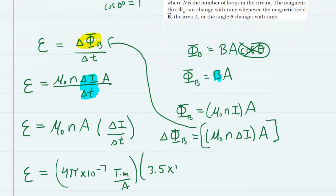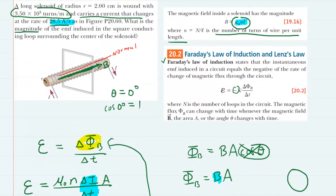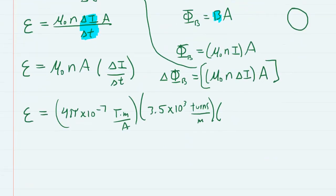3.5 times 10 to the third turns per meter multiplied by the area of the solenoid. Now the cross section of a solenoid would be circular in shape. If you were to sort of go back to the picture and look this way down the length of the solenoid, you would see a circular cross section. So we're going to need to substitute in πr² for area because that is the area of a circle.